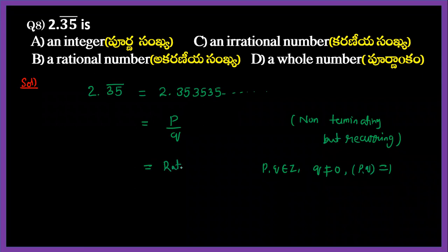Rational numbers. So 2.35 bar is a rational number. Therefore, option B is correct. Thank you.